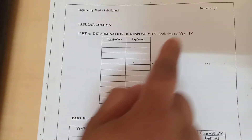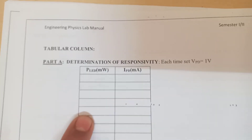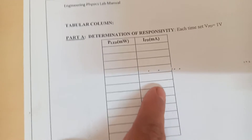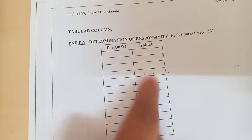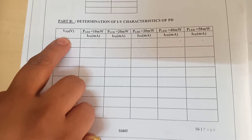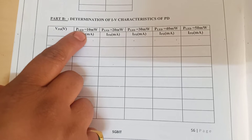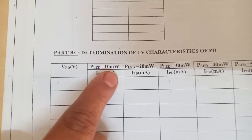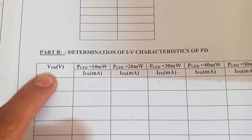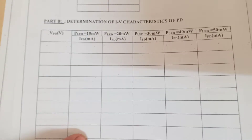In the first part, we keep VPD at 1 volt and by changing PLED — the power across the LED — the corresponding change in IPD should be noted. In the second part, VPD is kept constant and PLED is kept constant at 10 milliwatt. We are going to change VPD — the voltage across the photodiode — and the corresponding change in IPD should be noted.